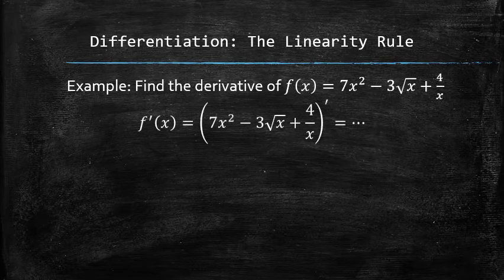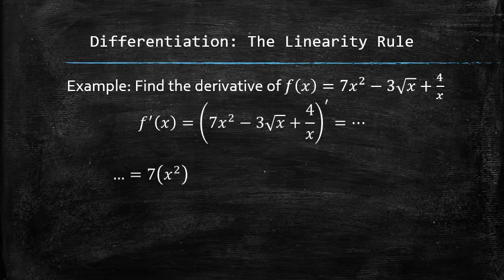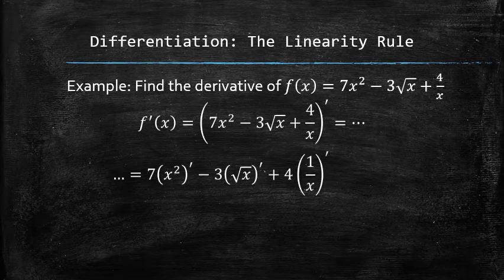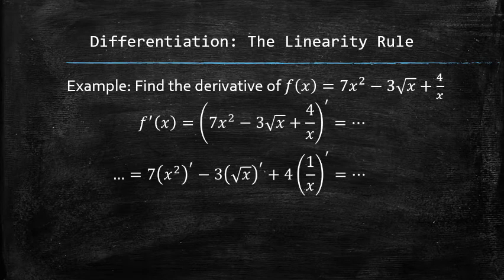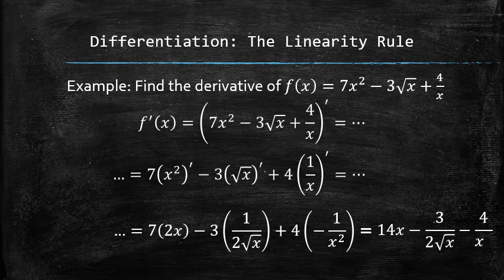We start the process by recognizing that we have to find the derivative of a linear combination of three functions, which is equal to the linear combination of three derivatives of three basic functions, for each of which we of course know the derivative. We get the final answer after plugging everything in and simplifying.